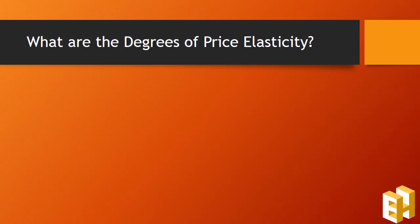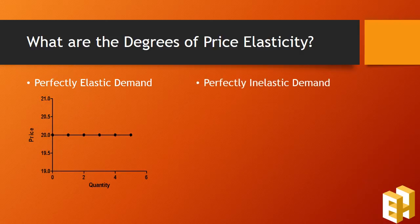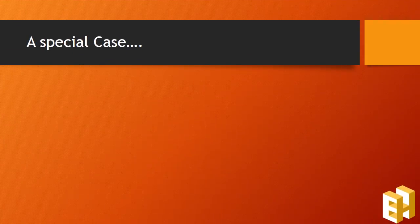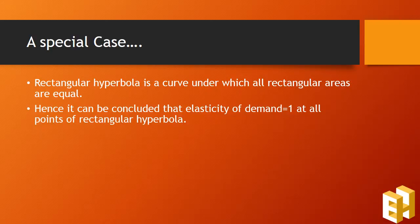What are the degrees of price elasticity of demand? In case of perfectly elastic demand, elasticity equals infinity, so our curve is a horizontal line parallel to the x-axis. In case of perfectly inelastic demand, elasticity equals 0, so our curve is a vertical line parallel to the y-axis. At times we have a curve of the shape of a rectangular hyperbola, which depicts that elasticity equals 1 at all points on the curve.